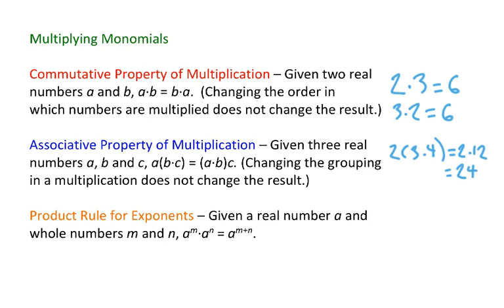If you change the grouping, you change which operation you do first. Two times three times four would mean multiply the two and the three first. That gives you six times four. Guess what? That's also twenty-four.